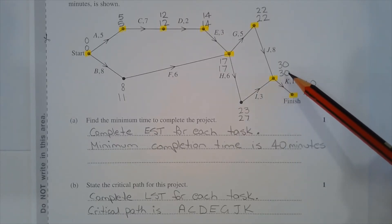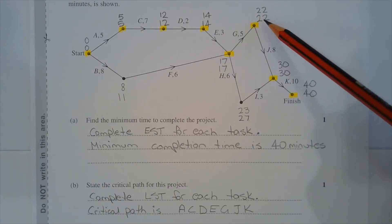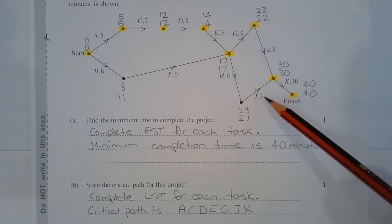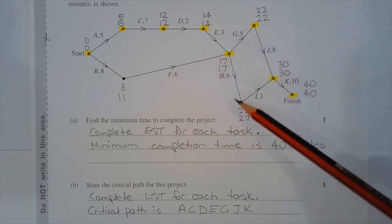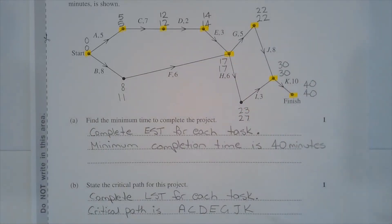30 minus 8 is 22. 30 minus 3 is 27. Now when there are two ways to get to a vertex, we write the lower of the two numbers, so it's the opposite of finding the EST for each task.